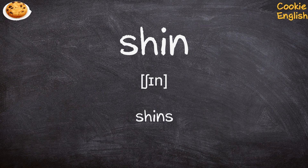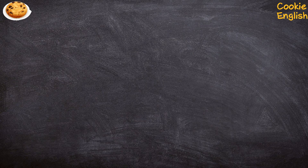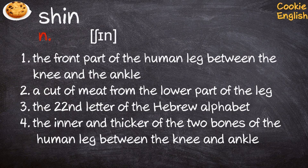Shins. Noun. 1. The front part of the human leg between the knee and the ankle.